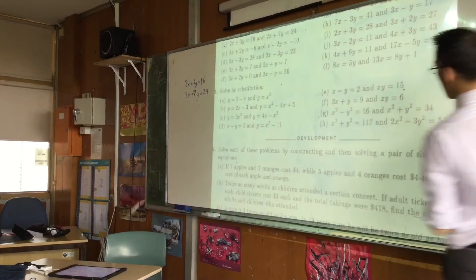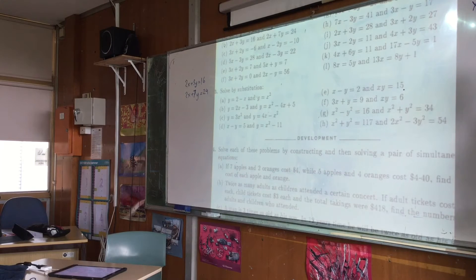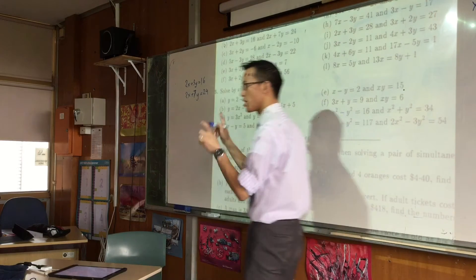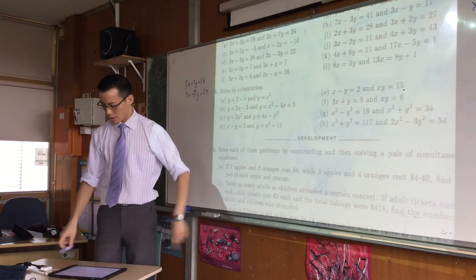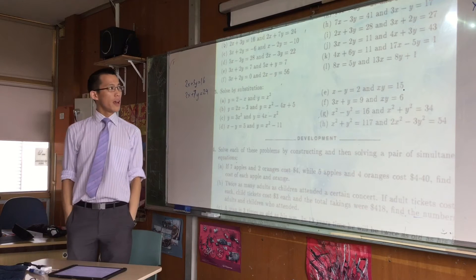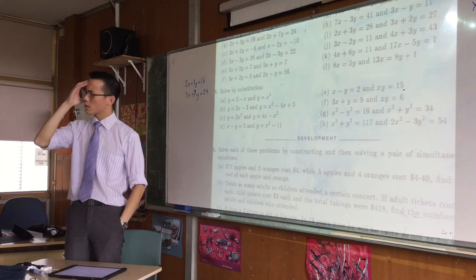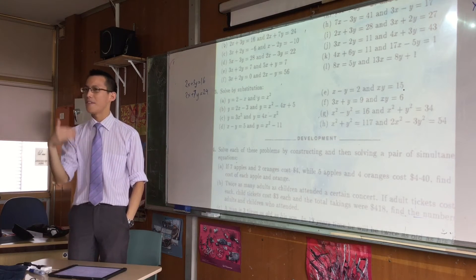So 3e looks like this: x minus y equals 2, xy equals 15. Now just pause for a second, don't type anything yet. I just want you to look at those equations for a brief moment and I want you to think about what does this mean.